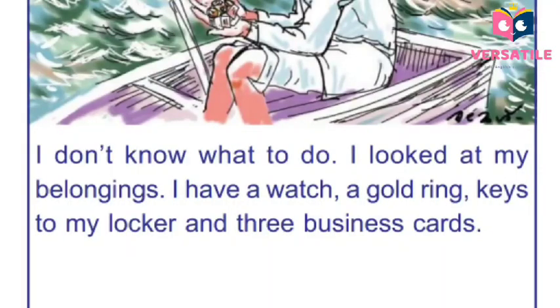Picture number twelve: 'I don't know what to do. I looked at my belongings — I have a watch, a gold ring, keys to my locker, and three business cards.' Now you have seen the complete story of 'The Shipwrecked Sailor' through these 12 pictures. The first and last one are already there in the textbook. The rest of the events, scenes, and dialogues you have to write under the pictures in your textbook.